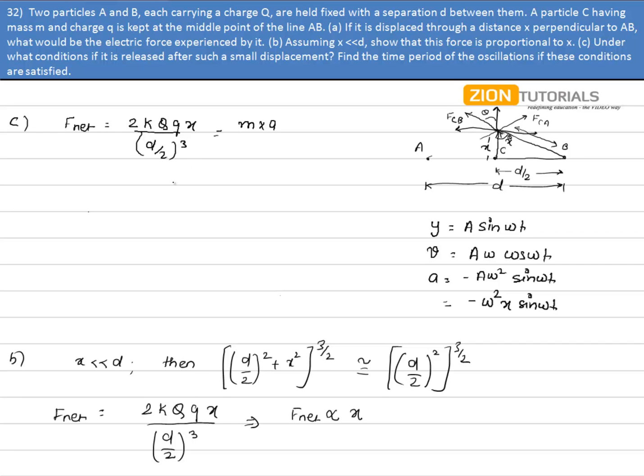Now in this case we have the maximum displacement, so the net force is given by 2 times KQq into x divided by d by 2 whole cube. That will be equal to mass into acceleration, and the acceleration as we calculated will be omega square x.